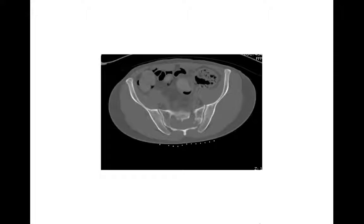Moving on to the sacrum and a brief differential for common lytic lesions there. Here we have a geographic lytic lesion taking up most of the mid-portion of the sacrum. This one turned out to be a metastatic lesion from a medulloblastoma of the brain. Metastatic lesions in general are one of the things you'll think about in the sacrum. Sacral lesions are often hard to see on radiograph — look for the arcuate lines and make sure you're seeing them all. Usually better seen on CT.